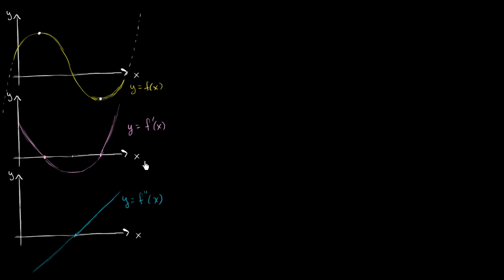The way that we did it: we asked what are the critical points for this function. Critical points are where the function's derivative is either undefined or zero. This is the function's derivative, and it is zero here and here, so we would call those critical points. So here and here are critical points — candidate points at which our function might take on a minimum or maximum value.